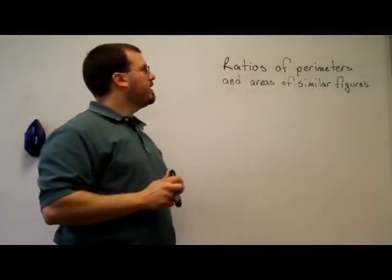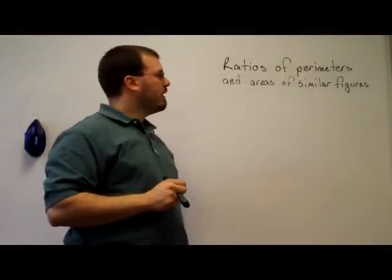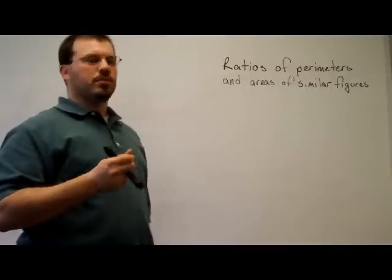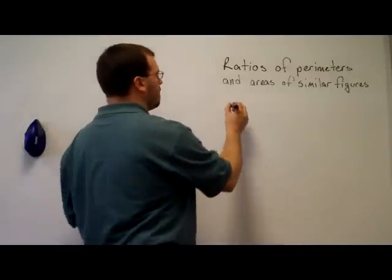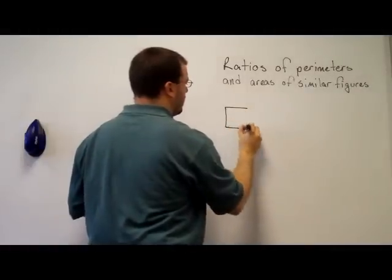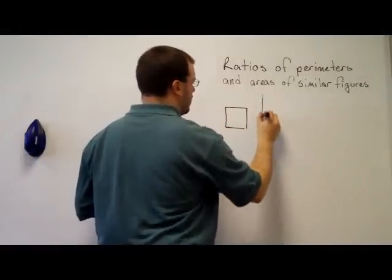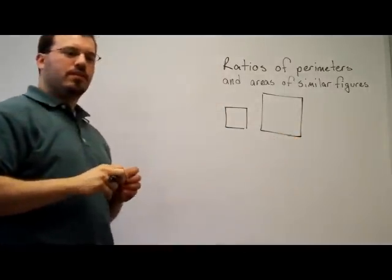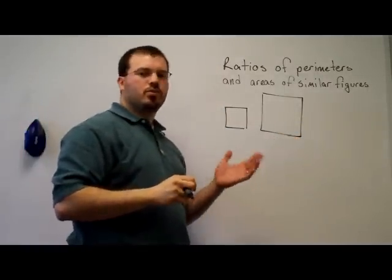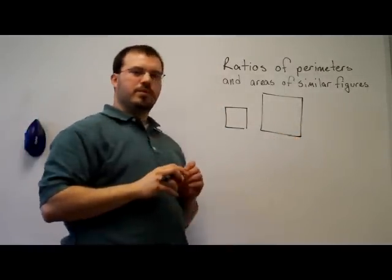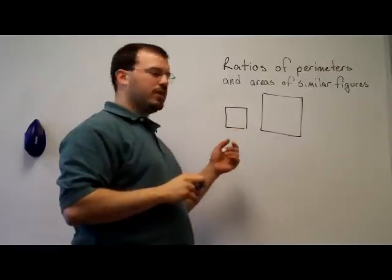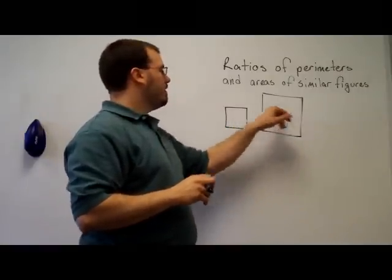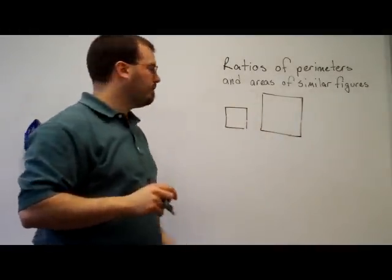In this video, we'll look at finding ratios of perimeters and ratios of areas of similar figures. The simplest way to look at this is with two squares. Two squares are obviously going to be similar because they've got all the same angle measures, and the ratio of sides will all be equal as well.